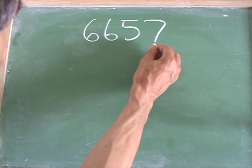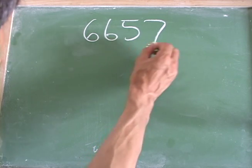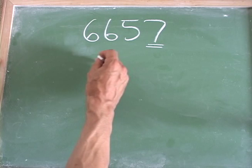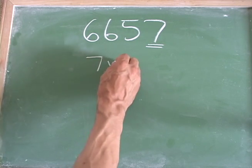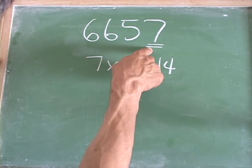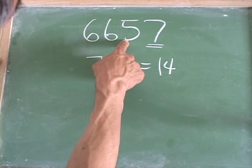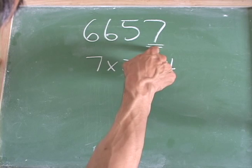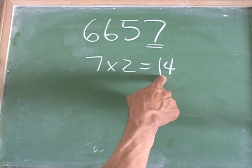With this approach what you do is you look at the last number, in this case it's a 7, and you take that number 7 and you multiply it by 2. So again, you take the last digit of your number here, 6657, you multiply that by 2 and you get 14.